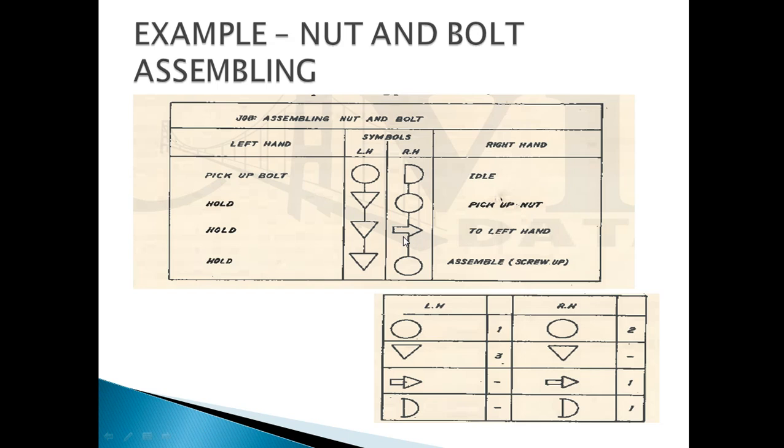In the last category, we're going to assemble and screw it up against the bolt. Our right hand is doing the work. Assembling is an action, so it is again denoted by the round symbol.